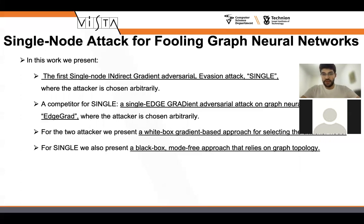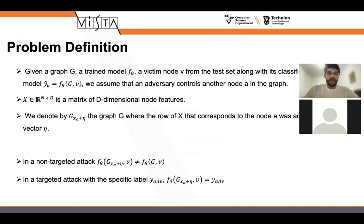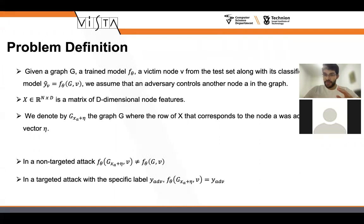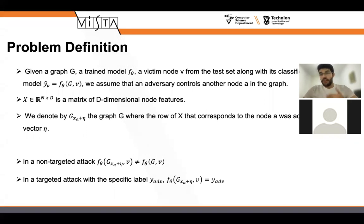It's important to note that regular Single randomizes its attacker node — we don't know which user is going to be the attacker, however we have some victim that we are focused on attacking. We look at two settings: the first is a non-targeted attack and the second is a targeted attack. In a targeted attack, you want the model to classify the victim as a specific label which is not its correct label. In a non-targeted attack, you don't care which classification you get as long as it's not the correct one.